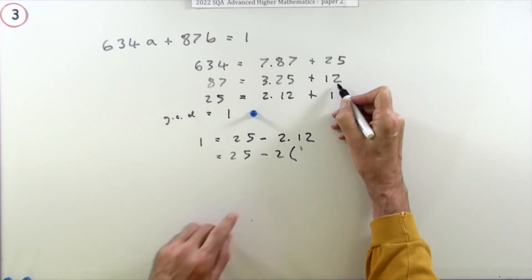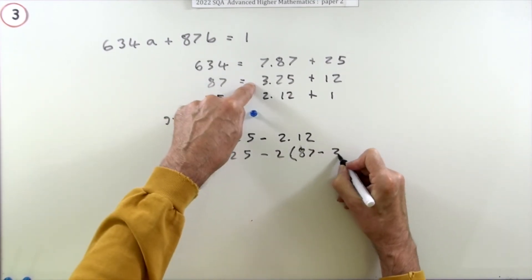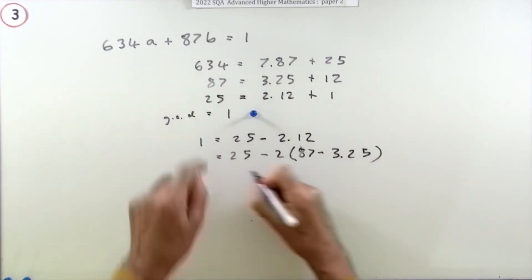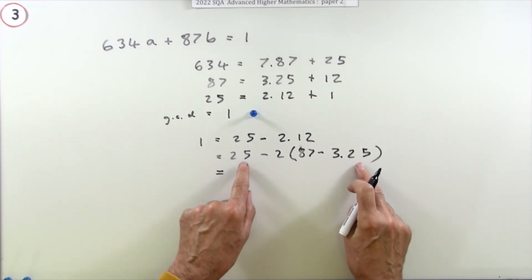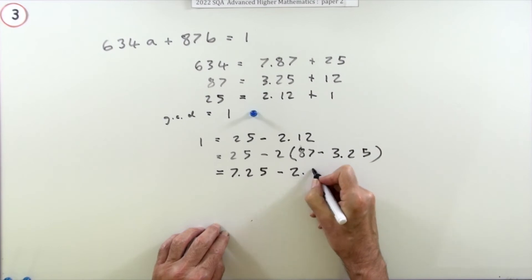Then I've got 12 here. I can replace the 12. I've got 25 minus 2 lots of (87 minus 3 lots of 25). That can be tidied up because I've got bunches of 25 - I've got one of them here and I've got plus six here, so that's 7 lots of 25 minus 2 lots of 87.